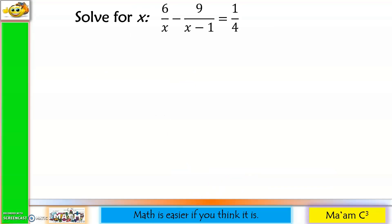Let us have another example. Let us find the LCD. So x is prime, x minus 1 is also prime. Then for 4, no other constants. So I am going to make use of 4 as well. The LCD is the product of these three denominators. So my LCD will be 4 times x times x minus 1.